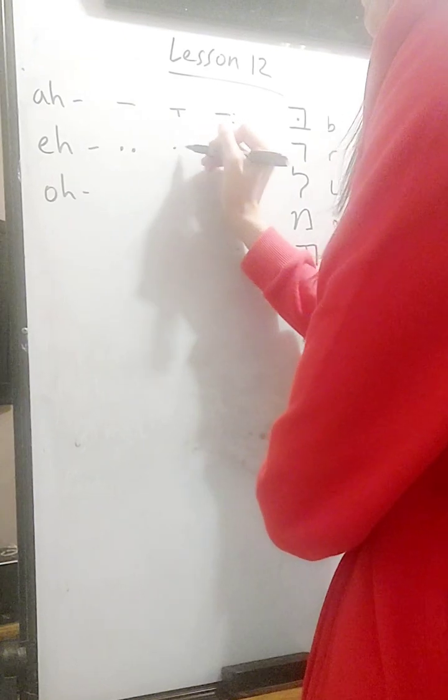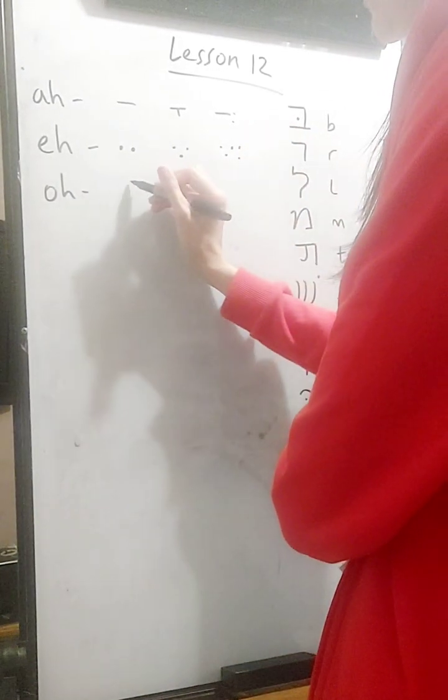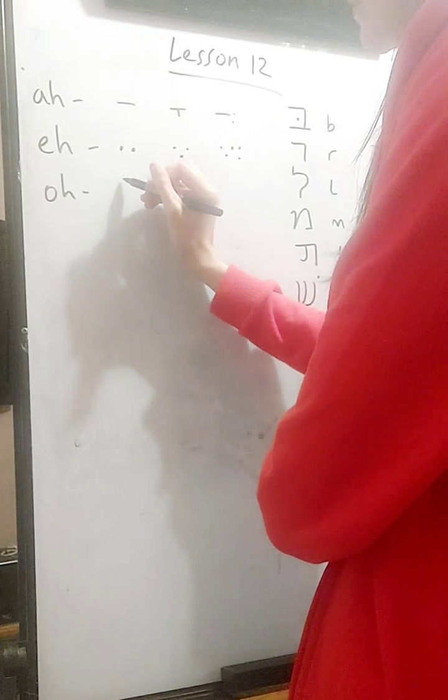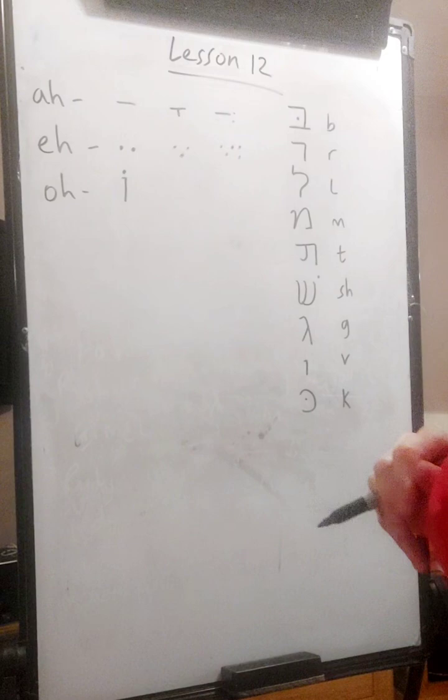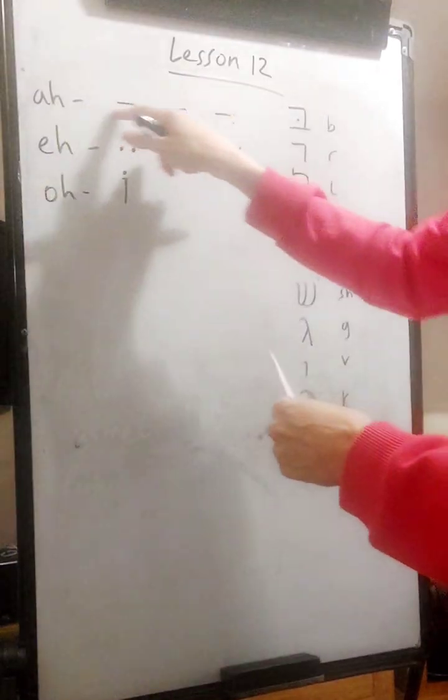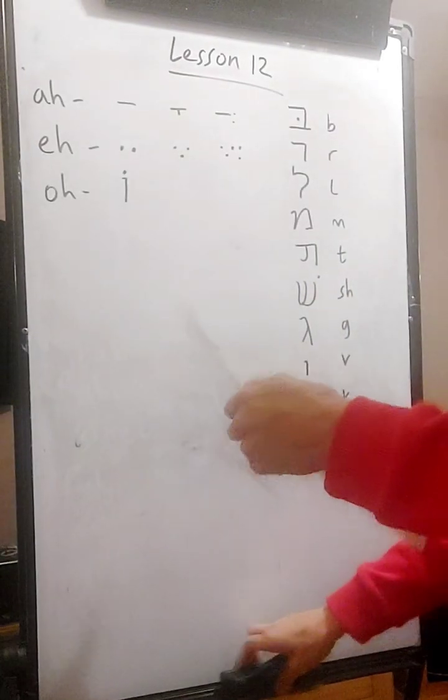The E is written one of these three ways. And the O vowel so far in the last lesson, we learned that it could be a vav with a dot over it. It can also be the O sound. So all these are A, E, and O. So we're going to learn the other O vowel today.